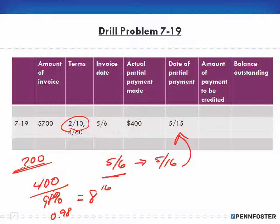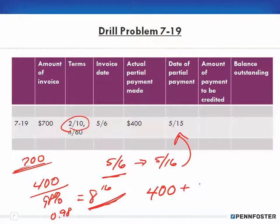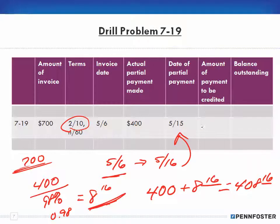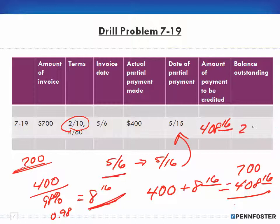So that $8.16 is the actual credit to me. I paid $400, and the credit applied to my account is $408.16. Then I subtract $408.16 from the $700 invoice and end up with an outstanding balance of $291.84.